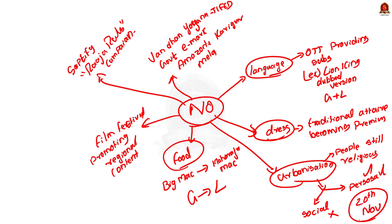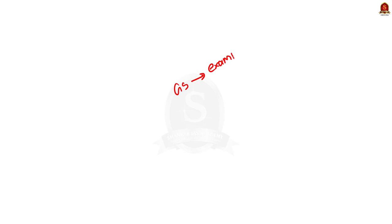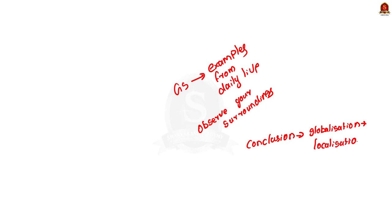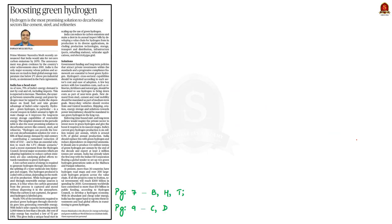This is a society question, and since it is a general studies paper, you can cite examples from daily life — that is more than sufficient. Be a keen observer of your surroundings. You can mention things observed from your surroundings depending on the question. In conclusion, you can write that while globalization is happening, the process of localization is also happening in tandem — you can take a middle path in your conclusion. You can write your version of the answer and post it in the comment section.